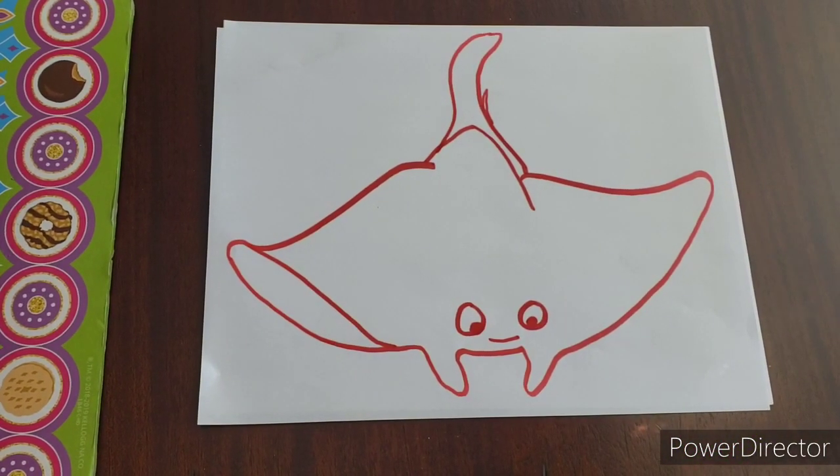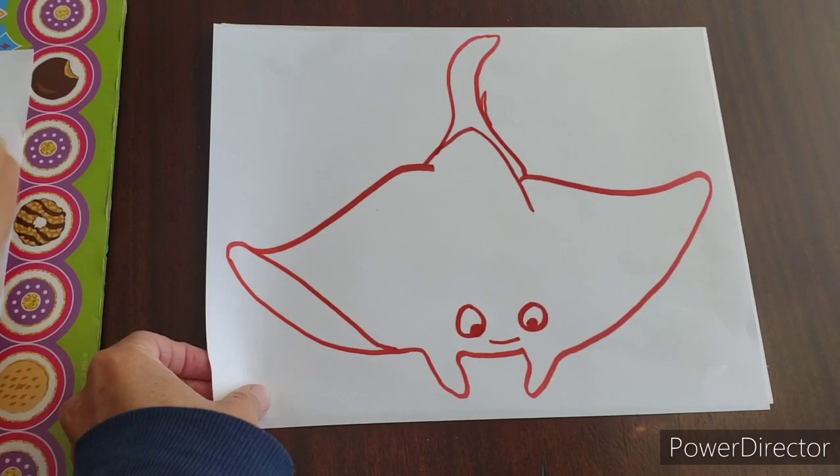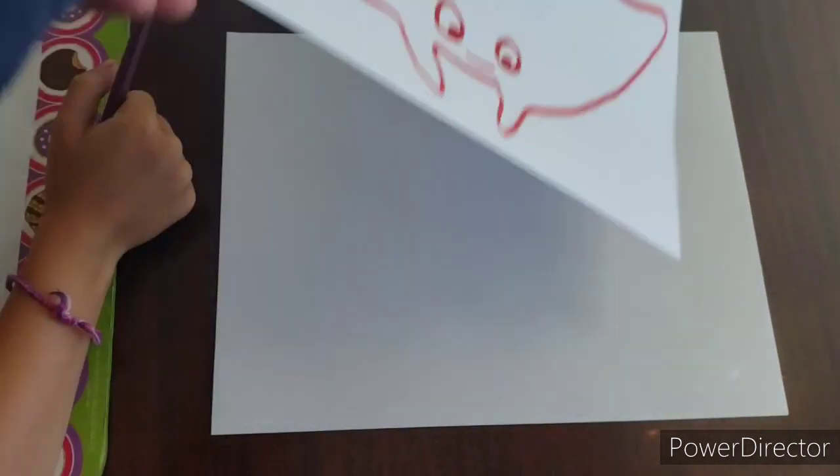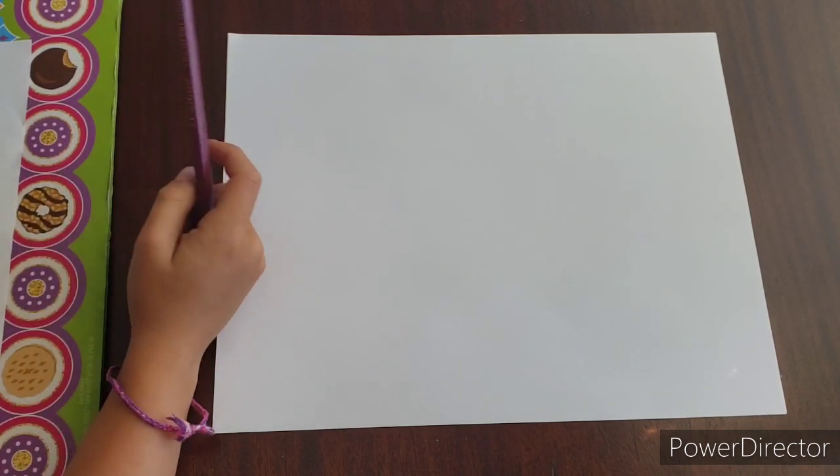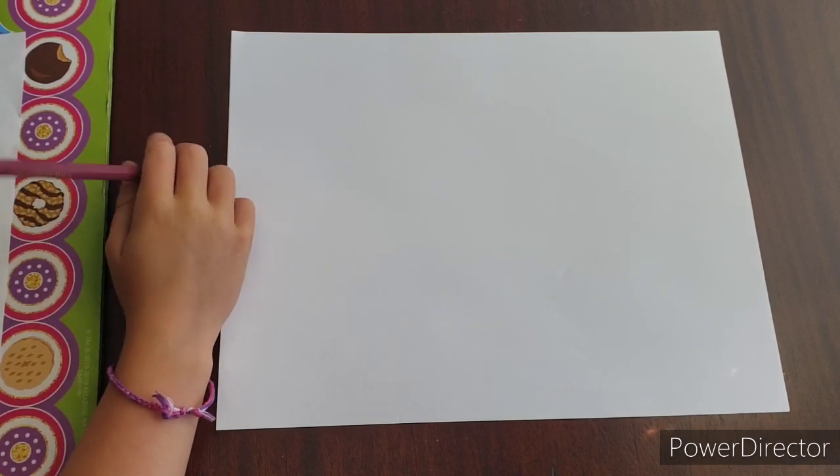Get a piece of paper and a pencil or marker, whatever you want to use. If you have a pencil, that's kind of easy because you can erase if you make mistakes. Okay, here we go.